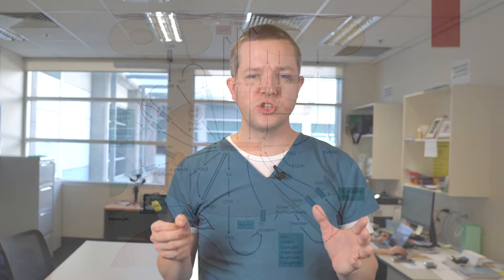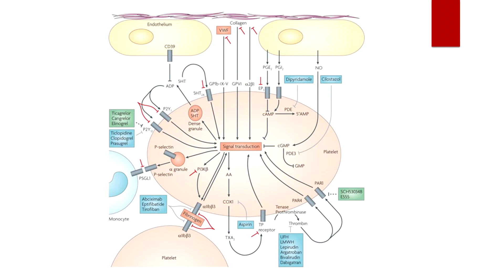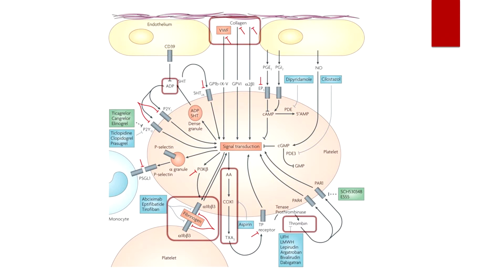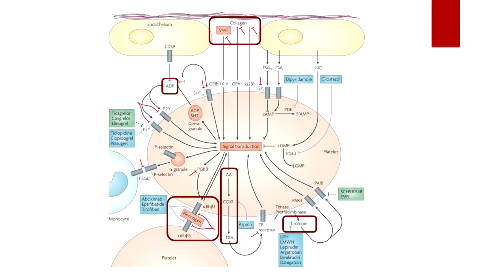Here's a diagram of a platelet — it may look complicated at first, but the key elements highlighted relate to the processes just discussed. At the top you can see endothelial cells with a break between them, where collagen, tissue factor, and von Willebrand factor are active, providing the initial signals that early nearby platelets receive. They bind to receptors, activating the platelet to release granules. On the left side of the picture, ADP released by a platelet binds to P2Y12 receptors on other platelets, leading to further platelet activation.